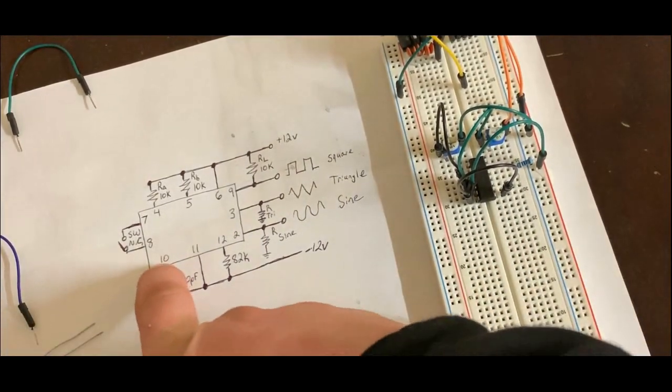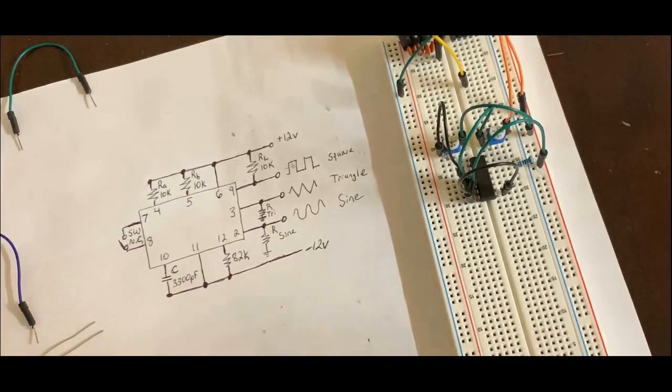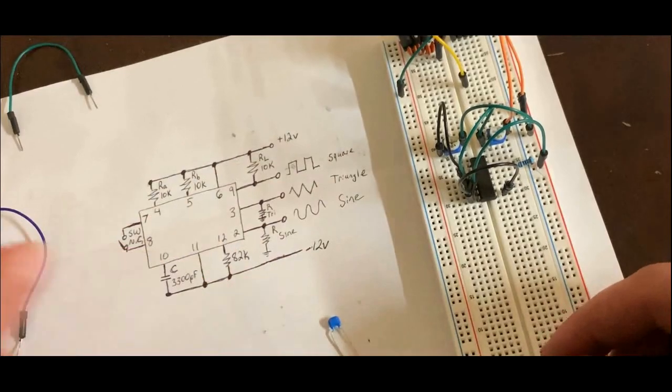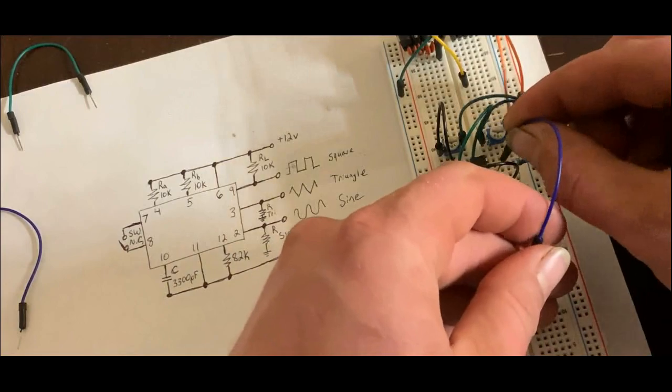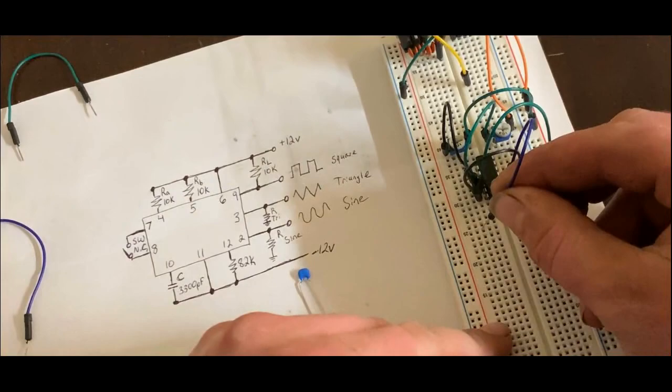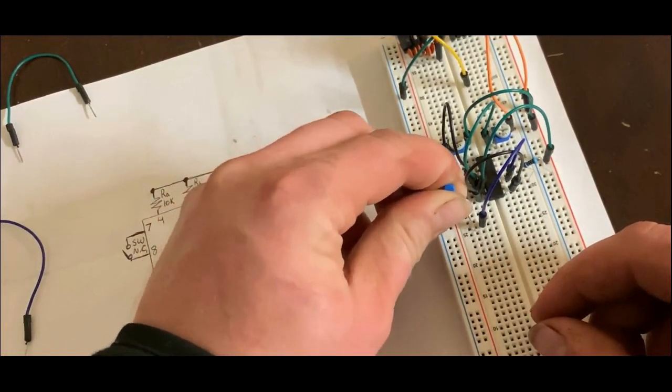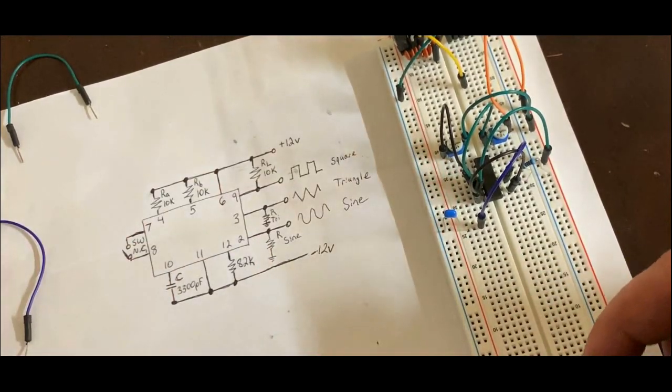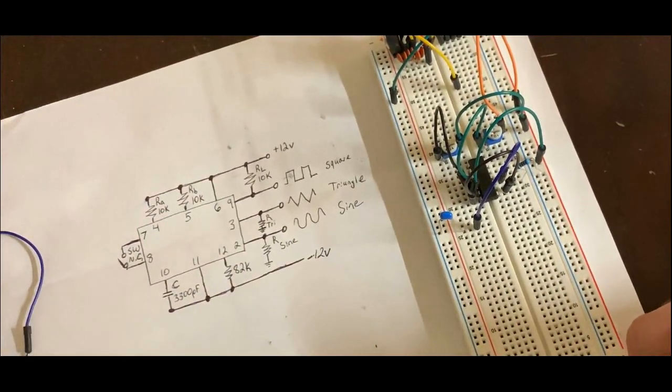Okay. And the next pin, 10, goes to negative 12 volts through a 3,300 picofarad capacitor. So, I'm going to come off pin 10 and come down here. And then, hook this to the negative voltage. And this is a non-polarized capacitor, so it doesn't matter which way I put it.